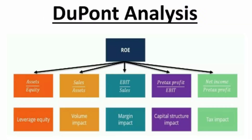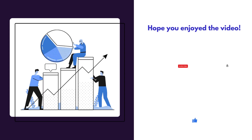Just to summarize, the DuPont analysis model is of great importance, as it does not just tell you what the ROE is, but rather it allows you to identify which specific variables are causing the ROE in the first place. By measuring and highlighting those underlying factors, it becomes easier to analyze and improve it if required and take better business and financial decisions.